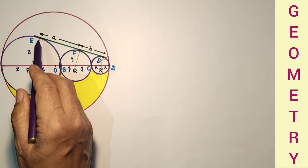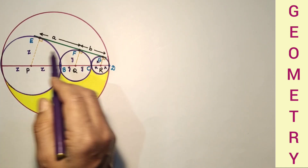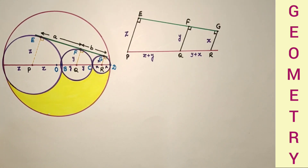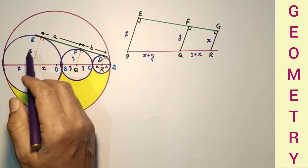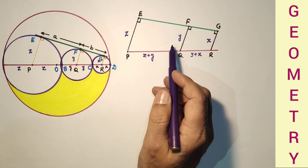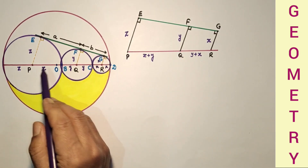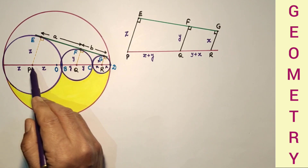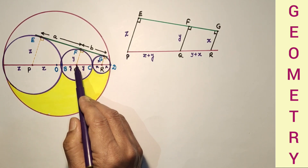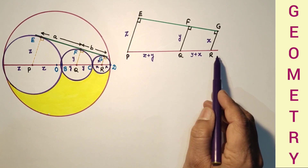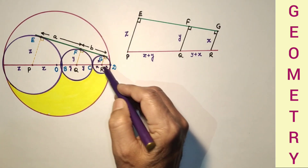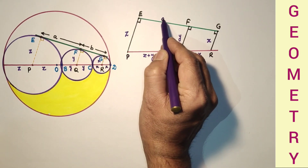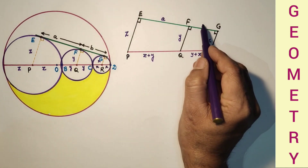I have drawn this diagram separately here. PQ is equal to Z plus Y, and QR is equal to Y plus X. The heights are labeled Z, Y, and X accordingly. This length is A and this length is B.